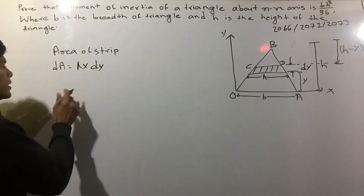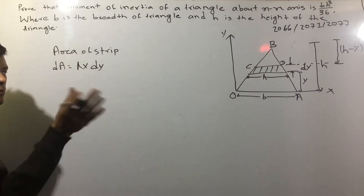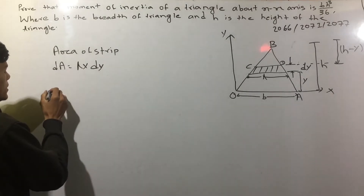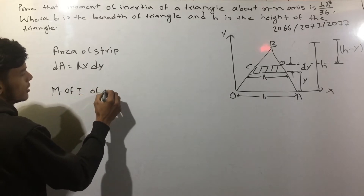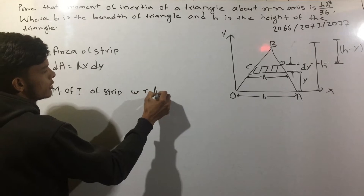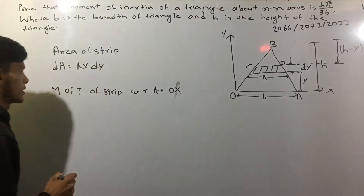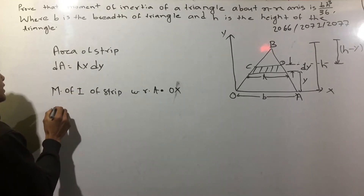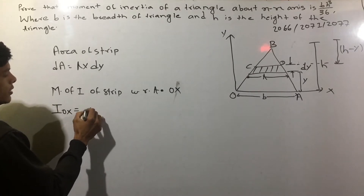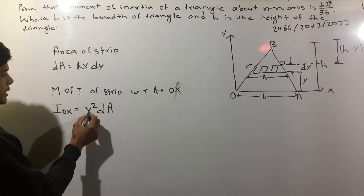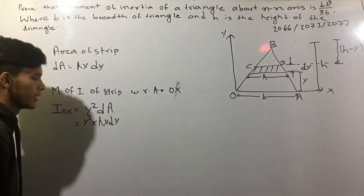Moment of inertia with respect to OA. The moment of inertia of strip — this is the integration of the full part of strip. Moment of inertia of strip with respect to OA: I would use the moment of inertia as distance squared into area, so y squared into y dy.